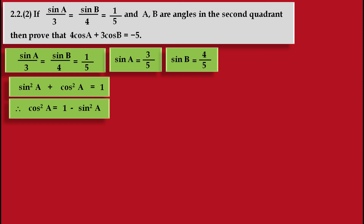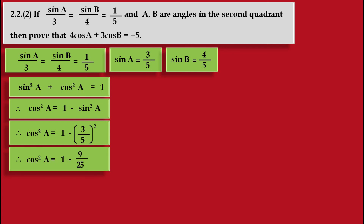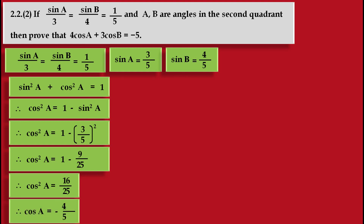Now we substitute the value of sin A, which is 3 upon 5, into the right hand side. So we get cos² A is equal to 1 minus (3 upon 5) squared. Solving this, cos² A is equal to 1 minus 9 upon 25, which gives us 25 minus 9 upon 25, that is 16 upon 25. This is the value of cos² A. Now taking the square root on both sides, we get cos A is equal to minus 4 upon 5.